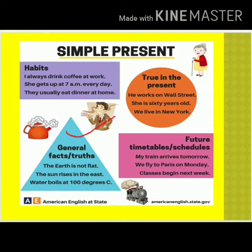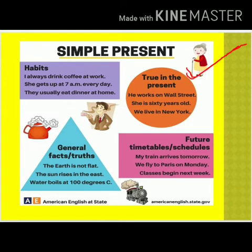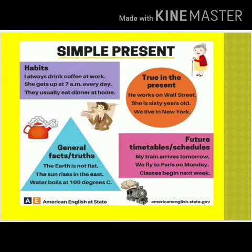The second use is for general facts and truths. For example: 'The earth is not flat, it is round' — this is a proven fact. 'The sun rises in the east' and 'Water boils at 100 degrees Celsius.' The third use is for things that are true in the present: 'He works on Wall Street,' 'She is 60 years old,' 'We live in New York,' 'You live in Nimbahera.' When something is no longer true in the present, we cannot use simple present tense for it.